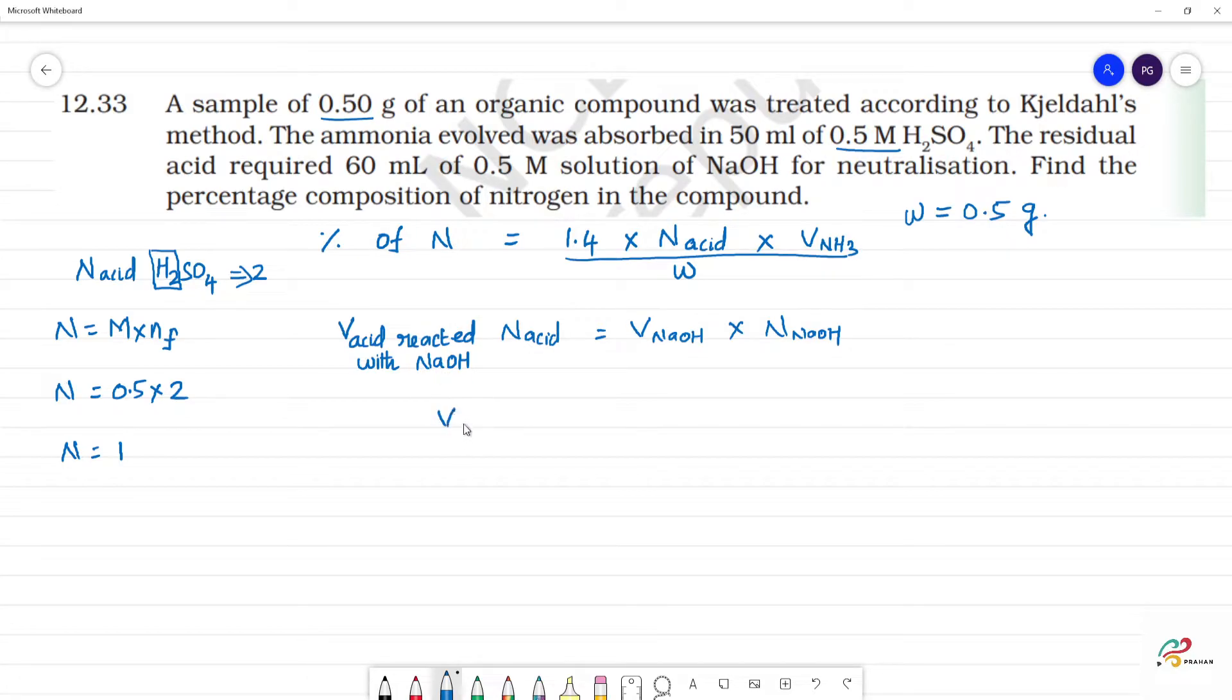Volume of acid reacted with NaOH is equal to... volume of NaOH is 60ml of 0.5M solution. This is 60 into normality of NaOH is equal to 0.5M. Normality of NaOH, normality is equal to molarity into n factor. Molarity is equal to 0.5M. N factor is 1. For NaOH, the replaceable OH minus ion is only 1. So normality is equal to 0.5M.